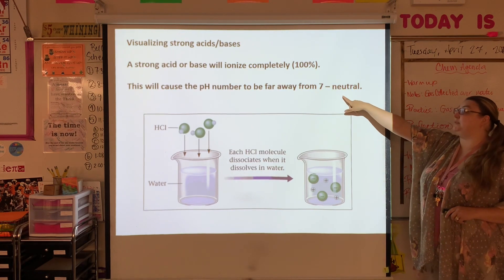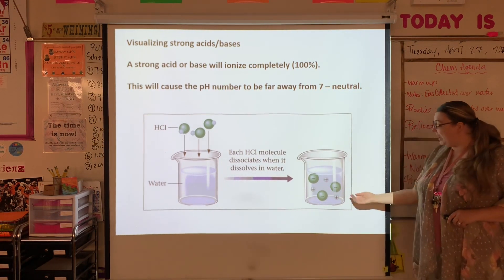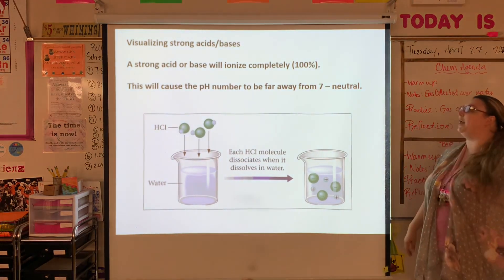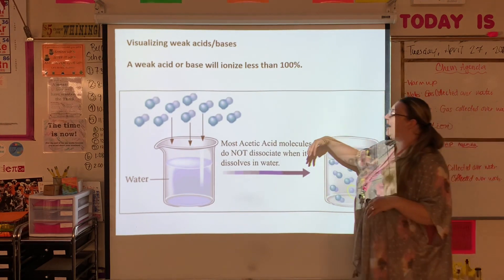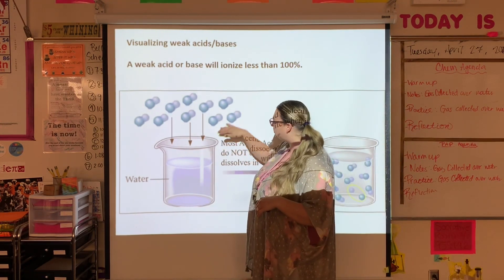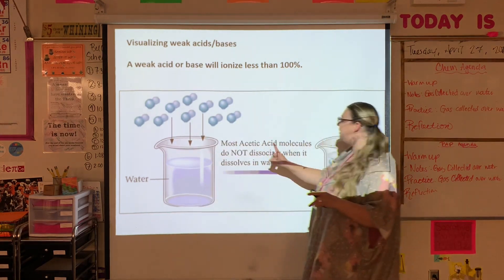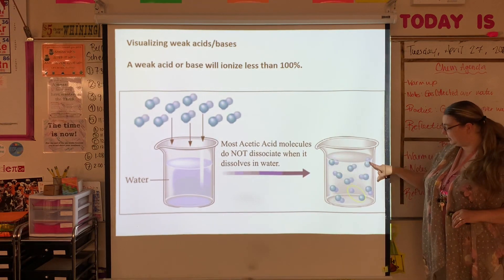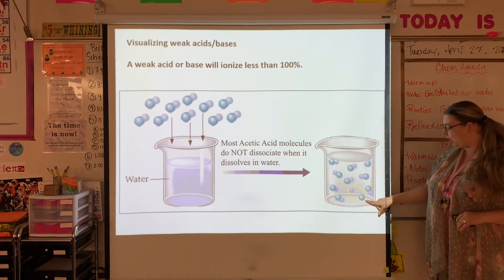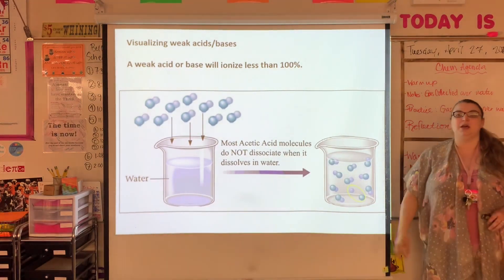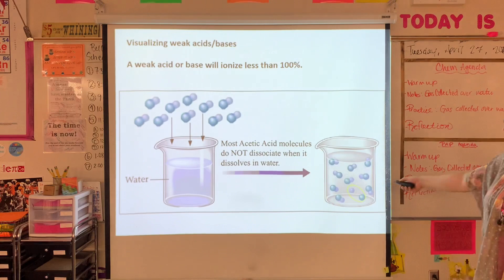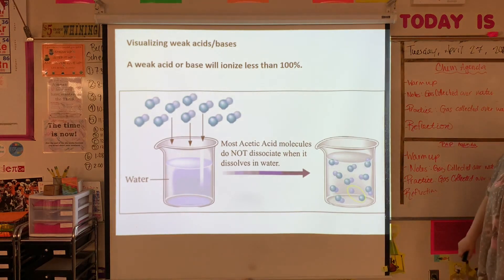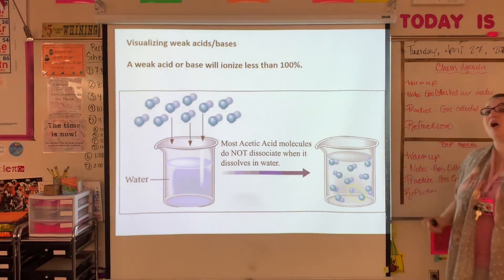This causes the pH number to be very far away from seven — seven is neutral on the pH scale. When we have all these hydrogen ions, we get really far away from neutral, headed towards one. Versus a weak acid or weak base: most of my acetic acid — vinegar — is going to stay as acetic acid. Only about 1 to 10% of it is going to actually break apart into the hydrogen ion and the acetate anion. So we still get ions, just not very many.